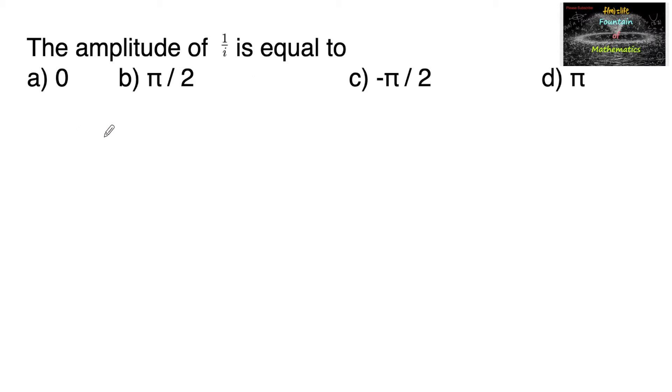The amplitude of 1 upon i. Let us consider z equals 1 upon i, which on multiplying by i upon i equals i divided by i square is minus 1, that is minus i. So 1 upon i is negative i.